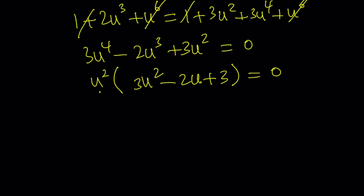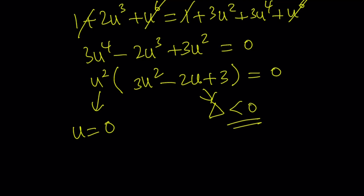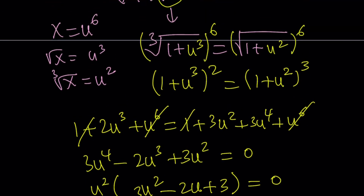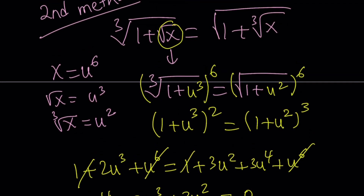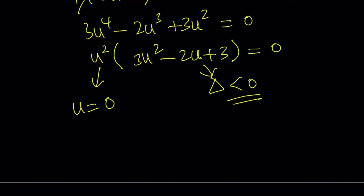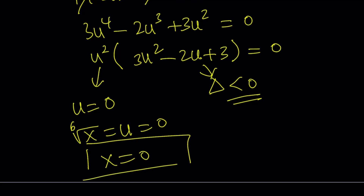From here, u squared equals 0 gives u equals 0. The quadratic factor 3u squared minus 2u plus 3 gives a negative discriminant, so there are no real solutions from that branch. Since x equals u to the 6th, u equals 0 means x equals 0. That is the only real solution — x equals 0.